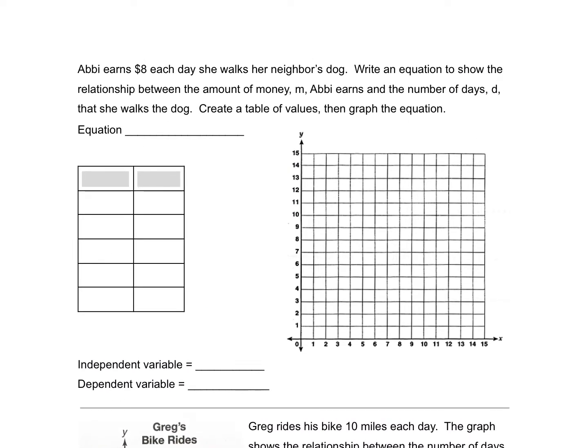Follow along with me. Abby earns $8 each day she walks her neighbor's dog. Write an equation to show the relationship between the amount of money, m, Abby earns and the number of days, d, that she walks the dog. Create a table of values and then graph the equation.